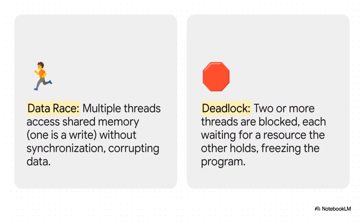First, you've got a data race. Imagine two people trying to write on the same spot on a whiteboard at the exact same time — the result is a garbled, corrupted mess. And then there's deadlock, which is somehow even worse. It's like a traffic jam where two cars are head-to-head, each waiting for the other to move. Nothing happens. The entire program just freezes. These are the bugs that give developers gray hair.